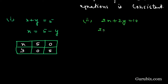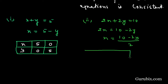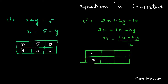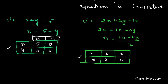For equation 2, 2x plus 2y equals 10, we get x equals (10 minus 2y) over 2. We draw a table for x and y: if y is 2, then x is 3; if y is 3, then x is 2. We label these points — point A and point B for equation 1, and point P and point Q for equation 2.